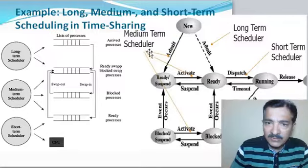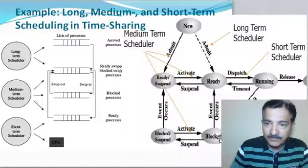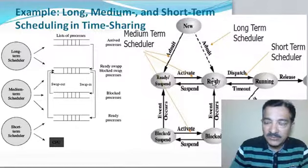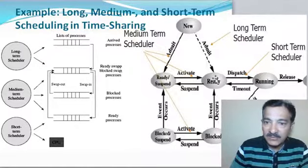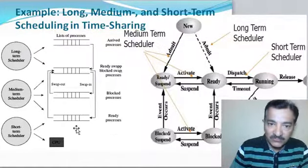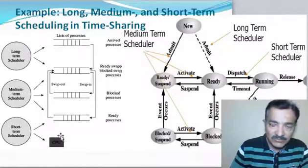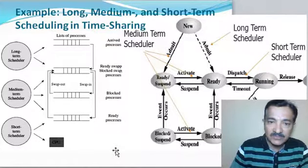The medium term scheduler is the scheduler which handles processes when they are blocked or suspended. The short term scheduler is the scheduler which schedules processes from the ready queue and gives them for execution to the CPU. So giving the process for execution to the CPU is done by the short term scheduler.